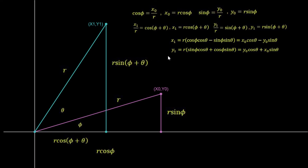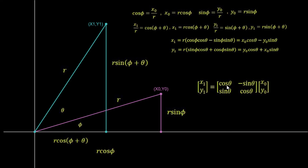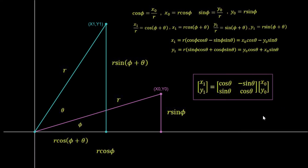Finally, we have what we were looking for: equations relating the outputs (x₁, y₁) to the inputs (x₀, y₀) and rotation angle θ. This can be written in matrix form: [x₁, y₁] = [[cos θ, −sin θ], [sin θ, cos θ]] × [x₀, y₀]. This is the rotation matrix. Let's go ahead and use this in the graphical calculator.